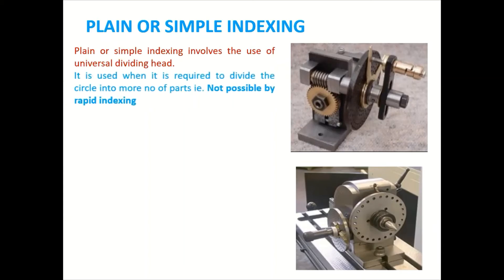It is used when it is required to divide the circle into more number of parts that is not possible by rapid indexing. Means you can see in the rapid indexing, there is a limitation.